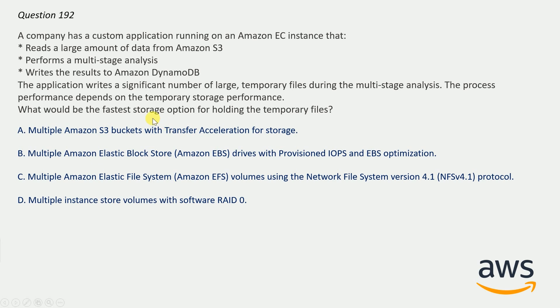The clue here in the question is 'significant number of large temporary files.' You must be aware of what we use for temporary files where performance should also be high. The correct answer here will be option D: multiple instance store volumes with software RAID 0. Instance store is a temporary and fastest storage option, so option D is absolutely correct here.